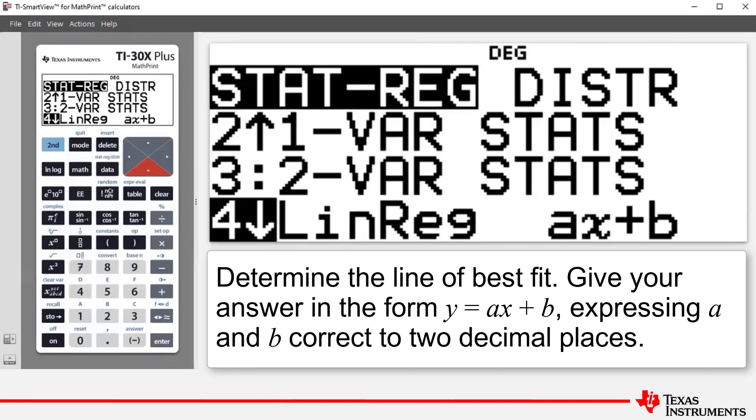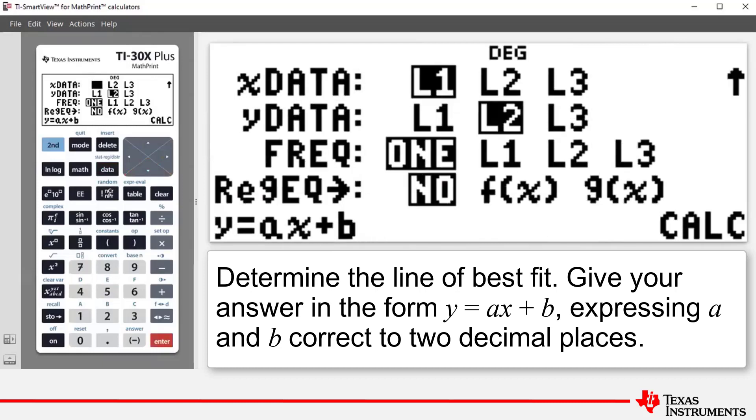And next to it you can see, AX plus B. And that's the command we wish to access. So at this stage, you can either press 4 or press enter. And it takes us to our linear regression setup page.